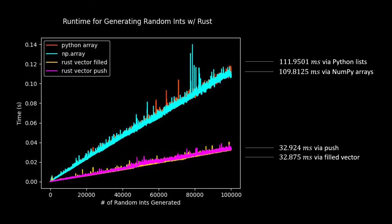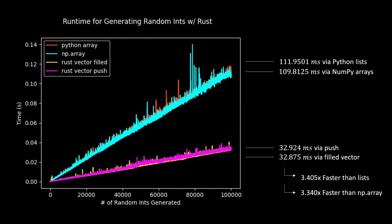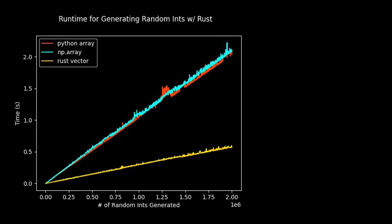These are all of the Rust results compared to one another. The Python and NumPy arrays are right around where we'd expect them — we saw marginal performance improvements with NumPy arrays, but we're hovering just around 110 milliseconds to generate 100,000 random integers between 1 and 10. But by pushing to an empty Rust vector — comparing this to appending with Python lists — we see significant performance improvements by handling all of this on the back end in Rust. Filling the vector and changing the values as we go along is a little bit faster, at about a tenth of a millisecond faster. This is 3.4 times faster than Python lists and 3.34 times faster than the NumPy arrays.